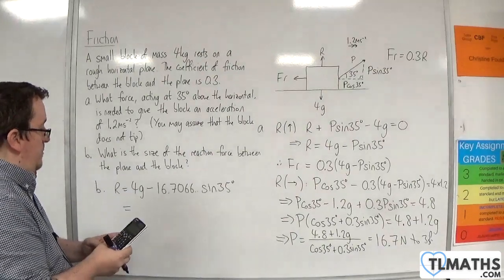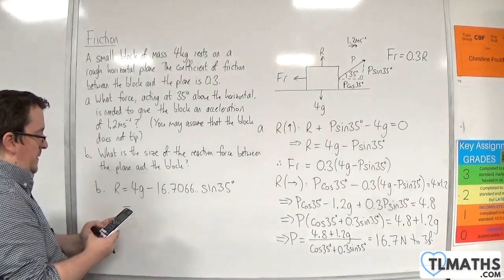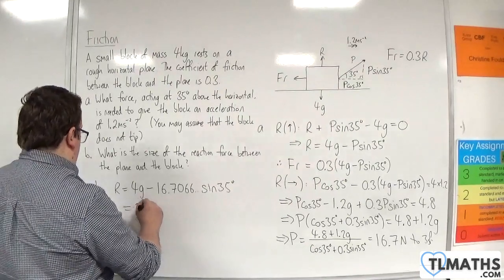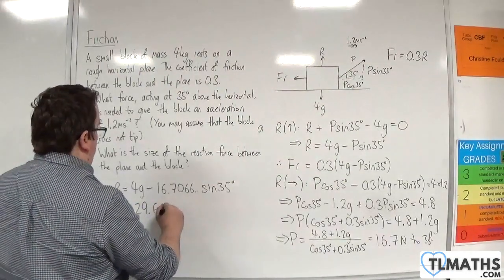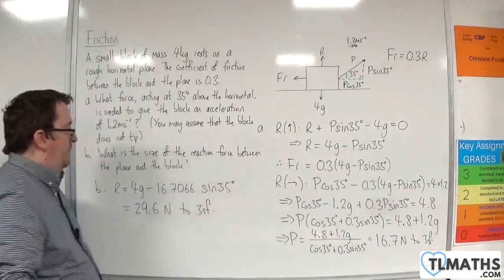So 4 times 9.8 take away the answer times sine of 35. And we get 29.6 newtons to 3 significant figures.